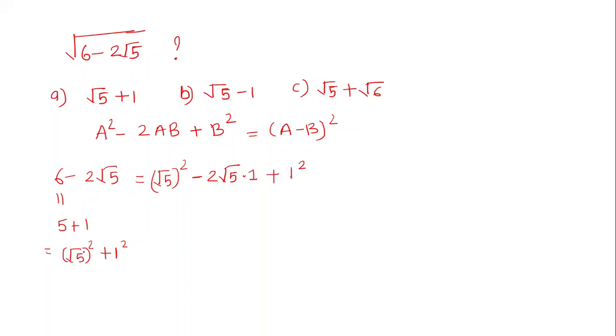So 6 = (√5)² + 1², and that is (√5)² - 2√5·1 + 1². We have a² - 2ab + b², so that can be written as (a - b)².